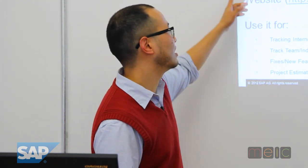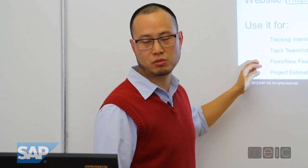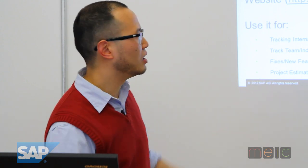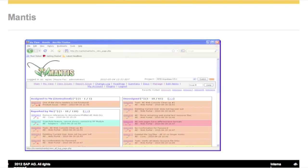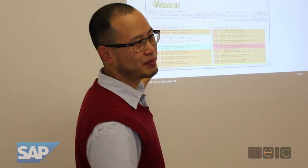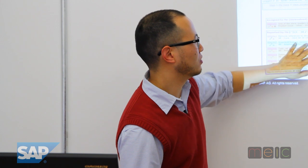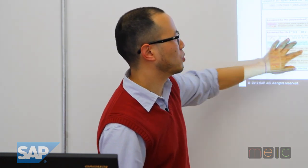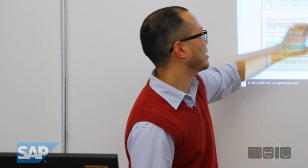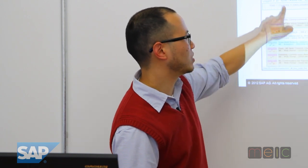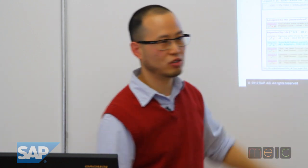Bugzilla is another similar tool that we use internally. Here's what it looks like. These workflow items show things like 'assigned to me,' 'reported by me,' 'unassigned,' 'view issue,' 'report issue,' 'my views' — you can set filters, view summaries, manage users, and do all kinds of other things.